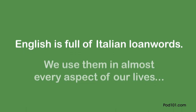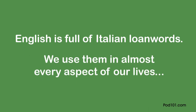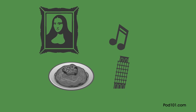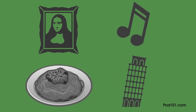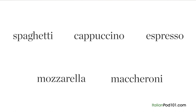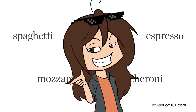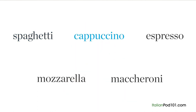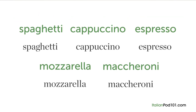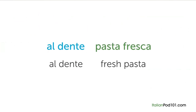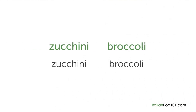The most obvious is probably cuisine. Words like spaghetti, cappuccino, espresso, mozzarella, and maccheroni are actually Italian. You might have seen 'al dente' or 'pasta fresca' — meaning fresh pasta — on English pasta packages. Did you know that 'zucchini' and 'broccoli' are also from Italian?